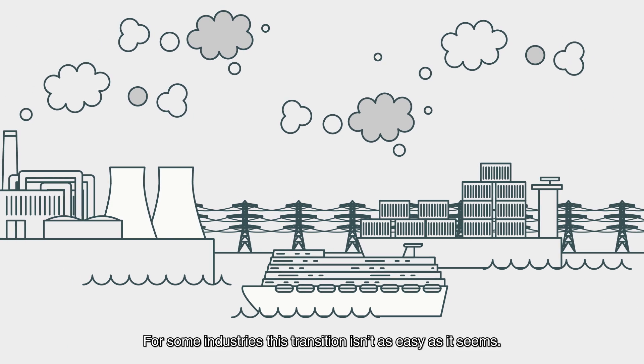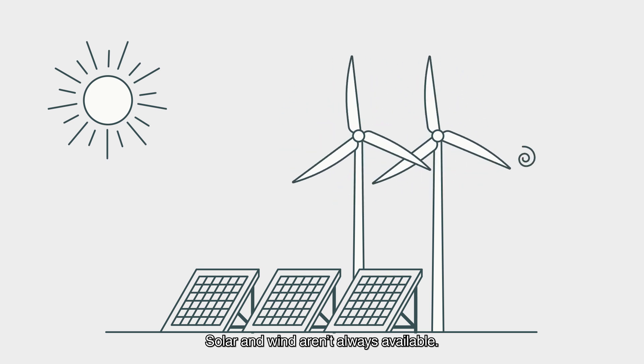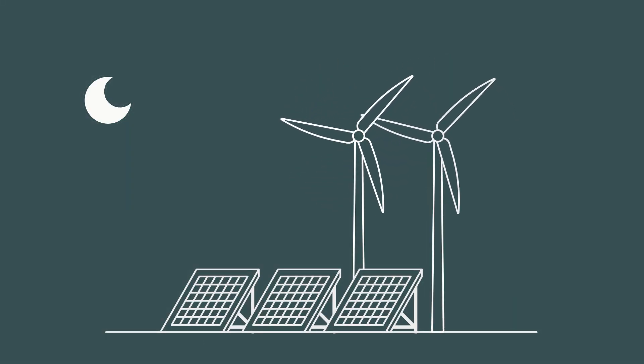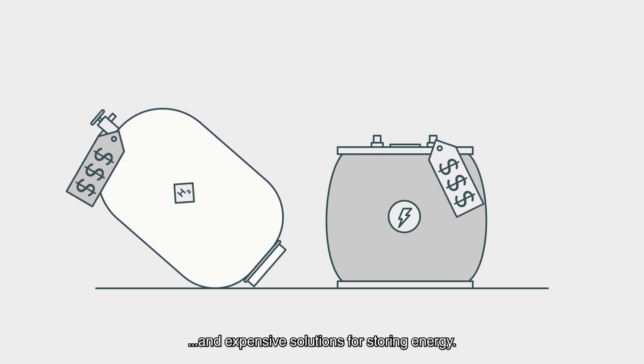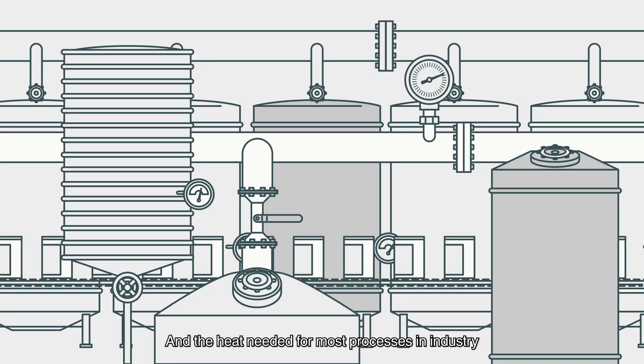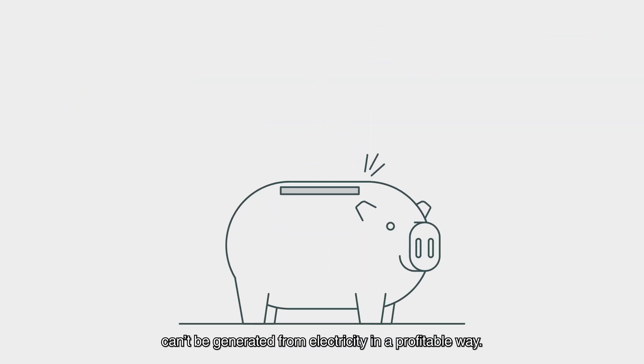For some industries, this transition isn't as easy as it seems. Solar and wind aren't always available. Hydrogen and batteries are bulky and expensive solutions for storing energy. And the heat needed from most processes in industry can't be generated from electricity in a profitable way.